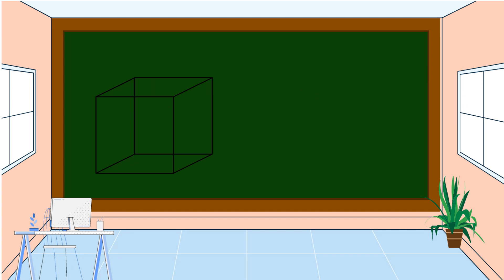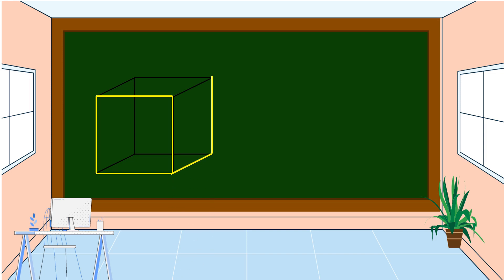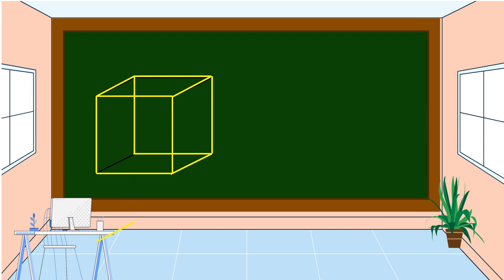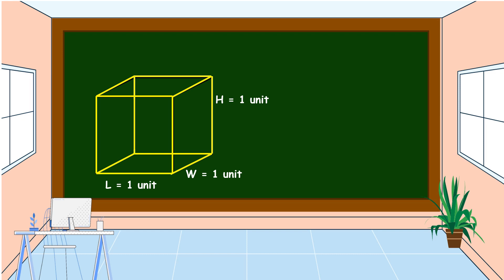If we add another dimension to a square, which is the height, it becomes a solid figure. This is a cube — it consists of three dimensions: the length, the width, and the height. As you can see, the measurements of the length, the width, and the height are equal, because all sides of a cube are equal.